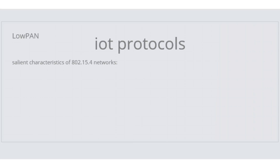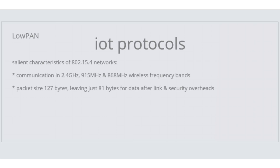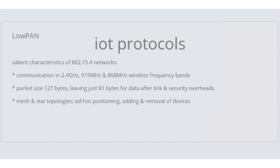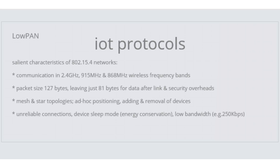Communication in 2.4 GHz, 915 MHz and 868 MHz wireless frequency bands. A packet size of 127 bytes, leaving just 81 bytes for data after link and security overheads are removed. LOPAN networks support mesh and star topologies and cater for ad hoc positioning and the adding and removal of devices from the network. Also characteristic is support for unreliable connections, including forms of device sleep mode — a form of energy conservation — and support for low bandwidth networks.